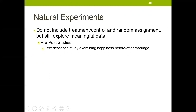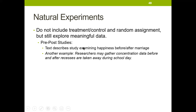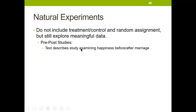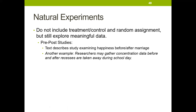Natural experiments do not include treatment, control, and random assignment, but they still explore meaningful data. For example, we might have a pre-post study looking at happiness levels before and after marriage. We're not having a treatment and control group and not randomly assigning anyone, but we're just comparing happiness levels — taking a gauge of happiness every three days for a month before marriage, then doing the same after three months of marriage and comparing pre- versus post-marriage happiness. We could not say that marriage caused happiness, because it's not a true experiment.